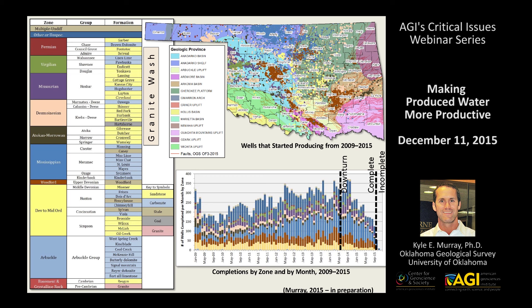In the upper section we have primarily sandstone units that produce oil and gas, and they're mainly conventional types of reservoirs. In the lower sections we have carbonate units and shale units that produce oil and gas. Today, the Mississippian, the Woodford, the Devonian to Middle Ordovician, and the Arbuckle group are probably the most important in terms of the volume of water co-produced with oil and gas and also as disposal zones.